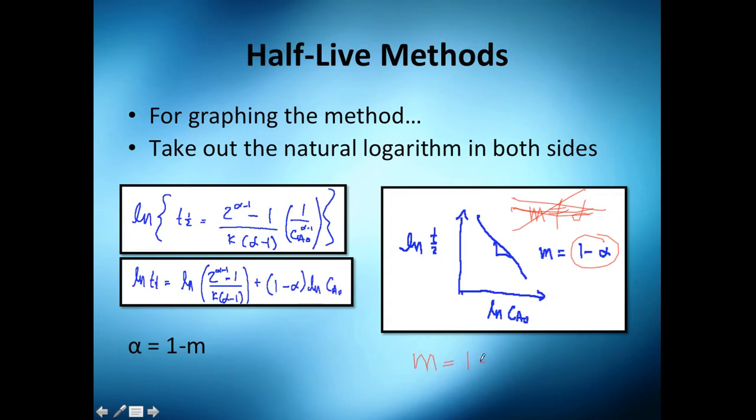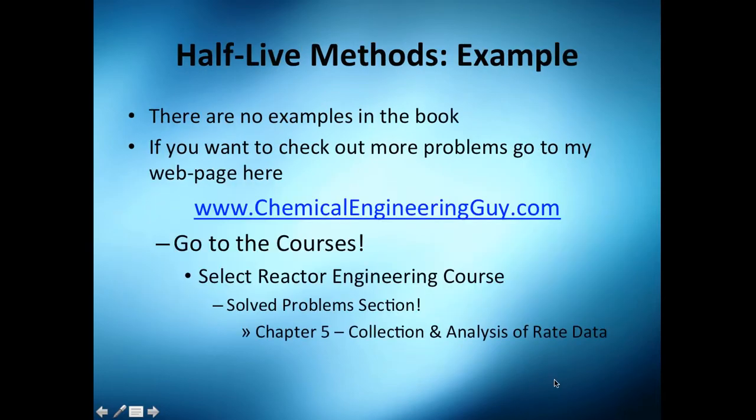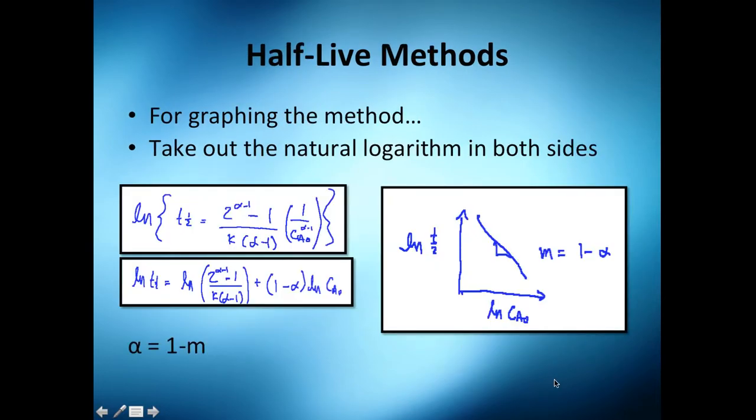Actually, the slope equals one minus the order. So if you wanted to calculate the order, it would be one minus the slope. So I got it. Where is it? Is it here? Yeah, alpha is one minus m. Yeah, just substitute in m and you will get the order.